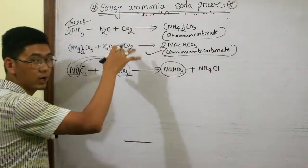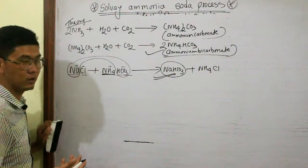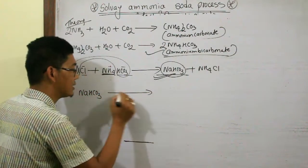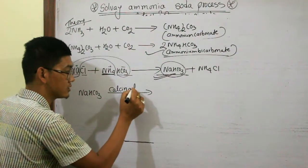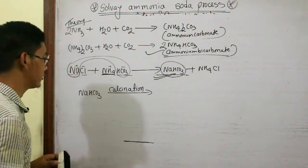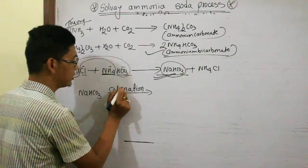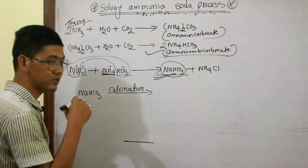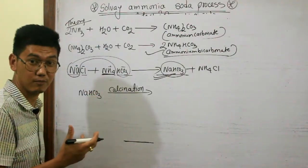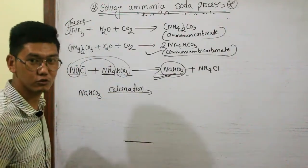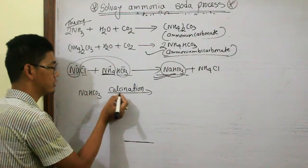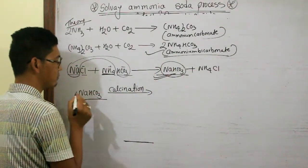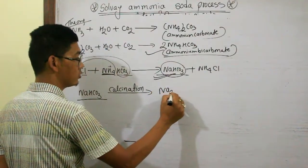In the Solvay ammonia soda process, we obtain sodium bicarbonate. Now this sodium bicarbonate is calcinated. Calcination means a heating process in the absence of oxygen, or in the presence of a very limited amount of oxygen. When we heat it, water molecules are removed from sodium bicarbonate and it changes to sodium carbonate.